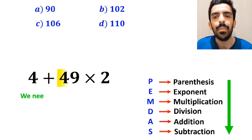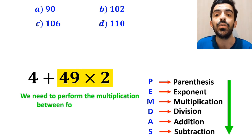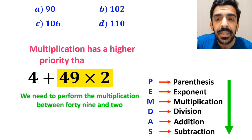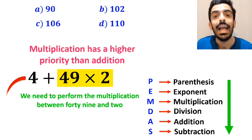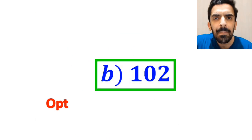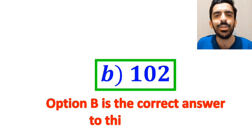And the final step, we need to perform the multiplication between 49 and 2, because multiplication has a higher priority than addition. And this expression simplifies to 4 plus 98, which ultimately gives us the answer 102. Therefore, option B is the correct answer to this question.